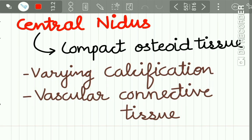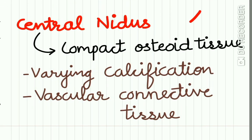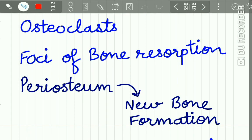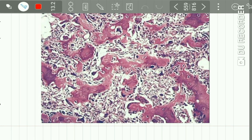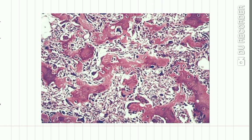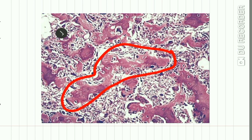Histologic features: there is a central nidus of compact osteoid tissue with varying calcification and vascular connective tissue. Osteoclasts are seen with foci of bone resorption, and the periosteum shows new bone formation. Here you can see osteoid tissue in the stroma with fibrovascular connective tissue stroma.